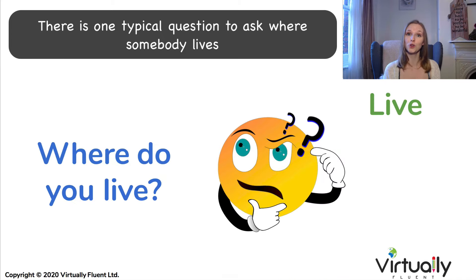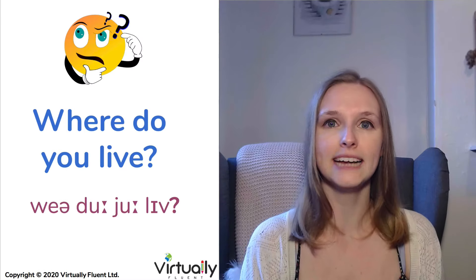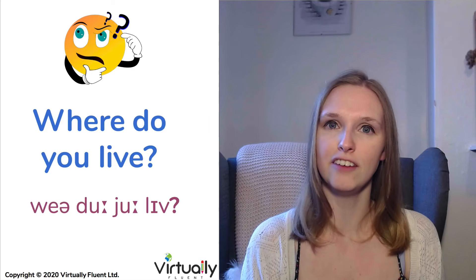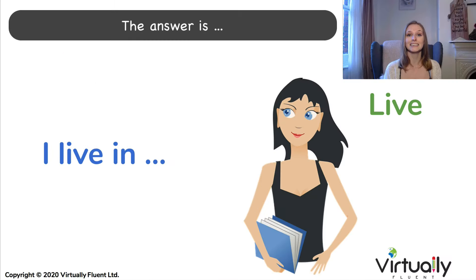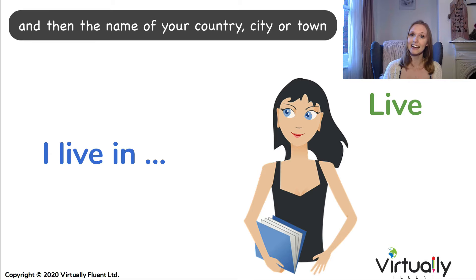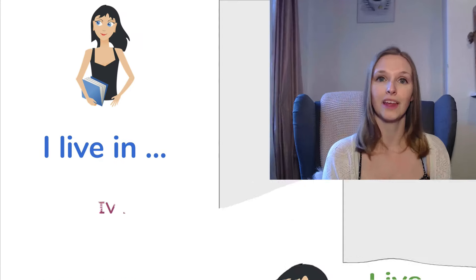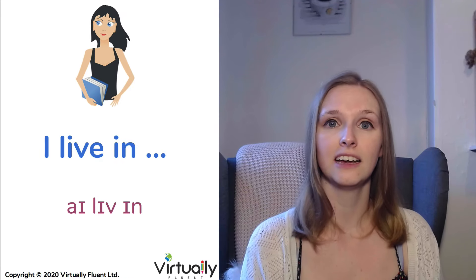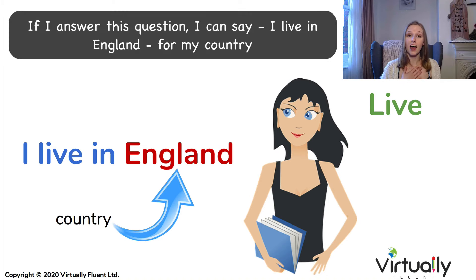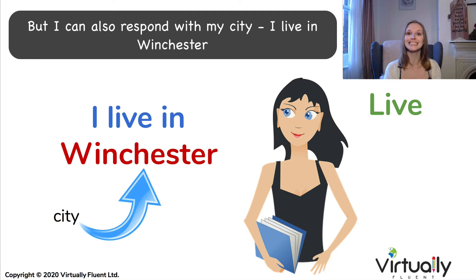There is one typical question to ask where somebody lives: 'Where do you live?' The answer is 'I live in' and then the name of your country, city, or town. If I answer this question I can say 'I live in England' for my country. But I can also respond with my city: 'I live in Winchester.'